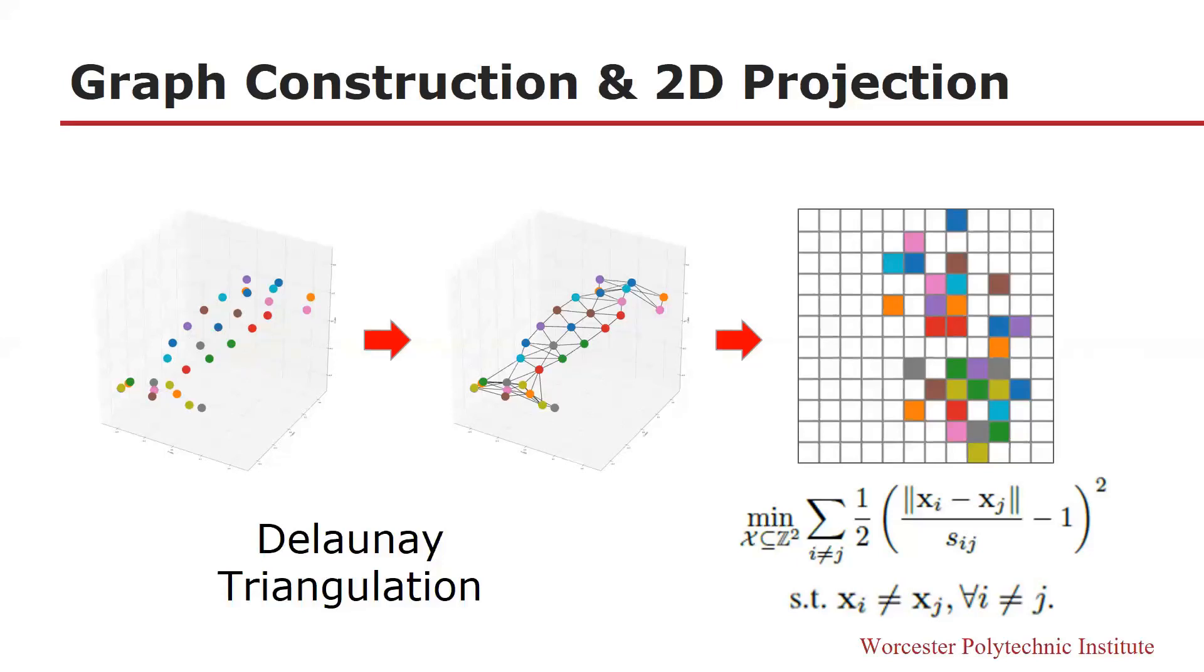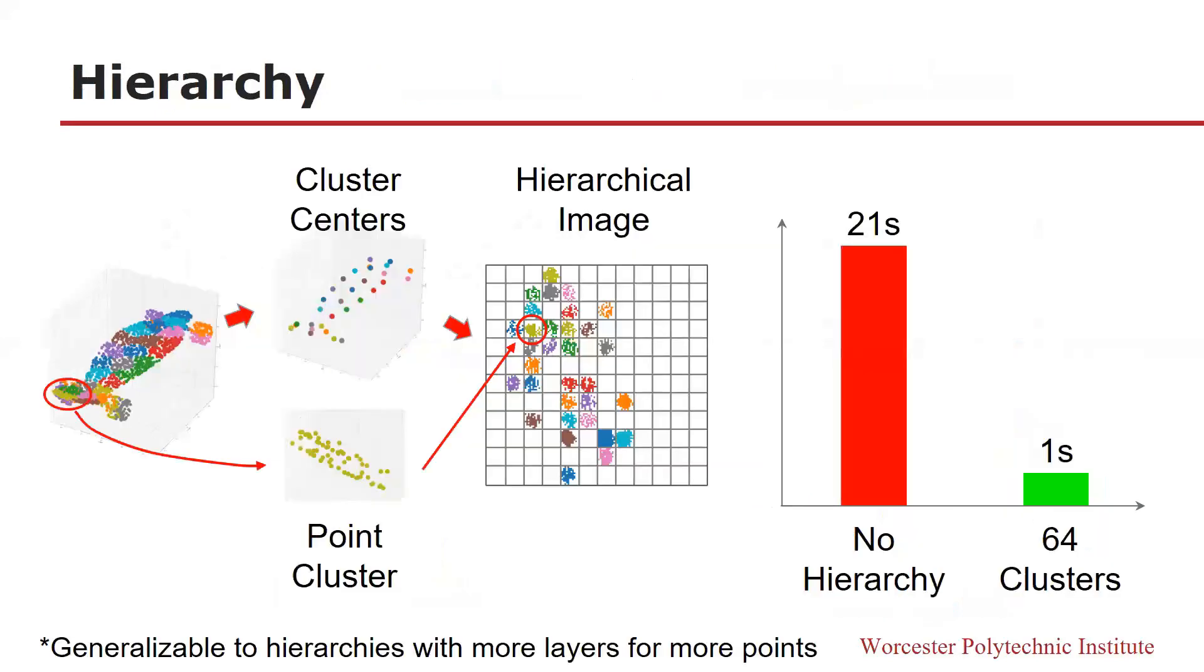The second part, graph drawing, tries to plot the points onto an image space while preserving the geometry pattern. As we see in the objective function, the method tries to minimize the error between Euclidean distance in image space and graph distance in graph space. This method is good at creating point cloud images but takes too much time.